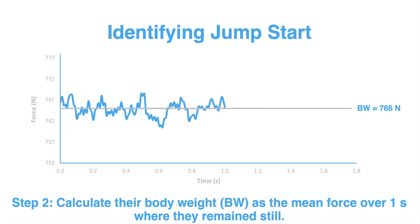The next step, in alignment with my previous video, is to calculate the athlete's body weight. We do that as the average force over that one second where they remain still. In my examples that's the initial first second, though if you've collected data for more than one second you just need to identify a period just prior to movement beginning where the athlete has remained still for one second. We stick to that one second weight assuming data has been collected at 1,000 Hz. That gray horizontal line in this zoomed-in force trace represents the average force — in this case 766 Newtons — which represents the athlete's body weight.